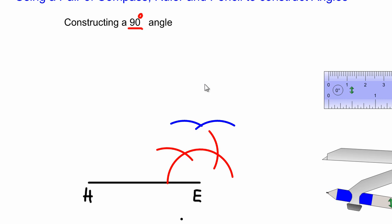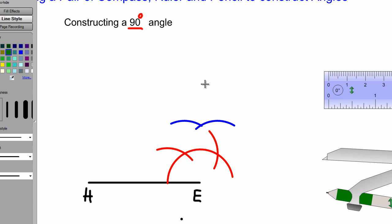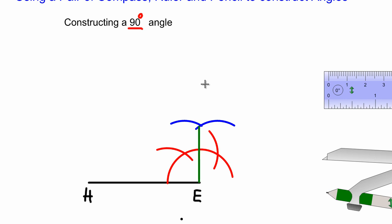Please use your ruler to draw this line from the point E straight through the point of intersection. And that's my 90 degree angle. That's how we construct a 90 degree angle at a point. It's that easy guys, bye bye.